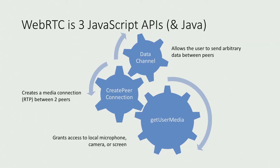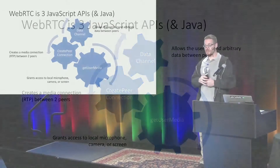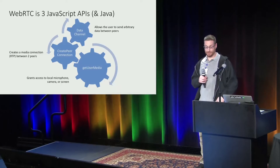WebRTC is basically three different APIs. There's the GetUserMedia API, which you use to get the camera and microphone from the user — it can also be extended to grabbing the screen or even Canvas elements. There's the PeerConnection API, which allows you to send real-time communication information to a distant party. And then there's the Data Channel API, which allows you to send arbitrary data over that peer connection.